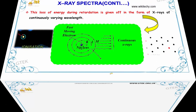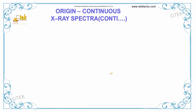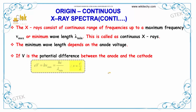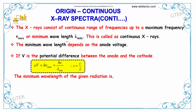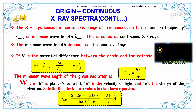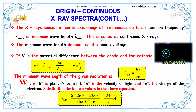The X-rays consist of a continuous range of frequencies up to a maximum frequency V_max, or a minimum wavelength lambda minimum, and this is called continuous X-rays.